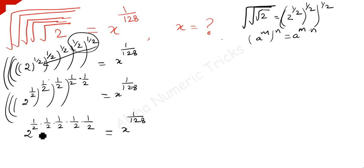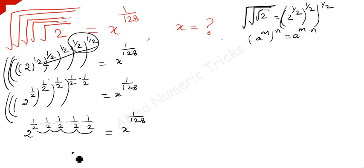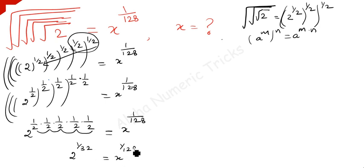But here we have multiplied this: 2 twos are 4, 4 twos are 8, 8 twos are 16, 16 twos are 32. So 2 to the power 1 over 32 is equal to x to the power 1 over 128.